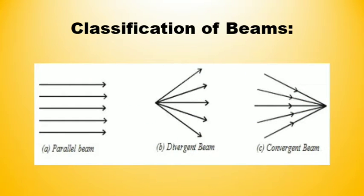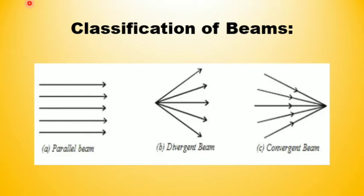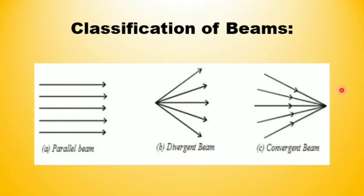Beams are classified into three kinds: parallel beam, divergent beam, and convergent beam. When the beam of light is parallel, it is called a parallel beam. When the rays of light meet at a point, it is called a divergent beam. And when rays of light are spread out from a point, it is called a convergent beam.